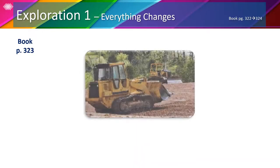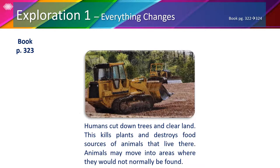In the last picture, we can see a bulldozer. Humans use it to cut down trees and clear land. This kills plants and destroys food sources of animals that live there. Animals may move into areas where they would not normally be found.